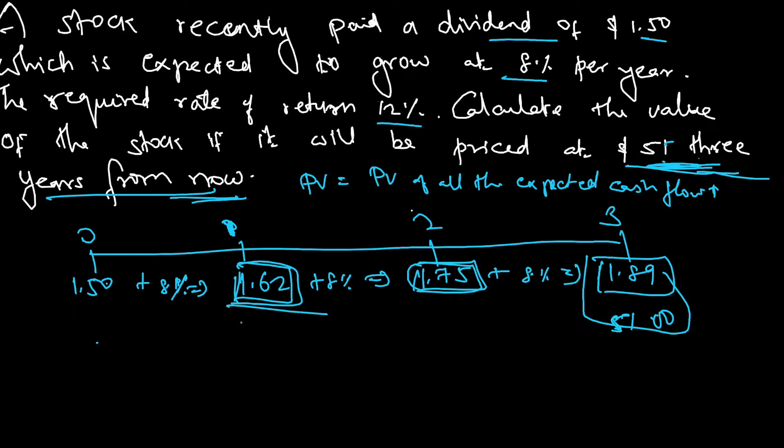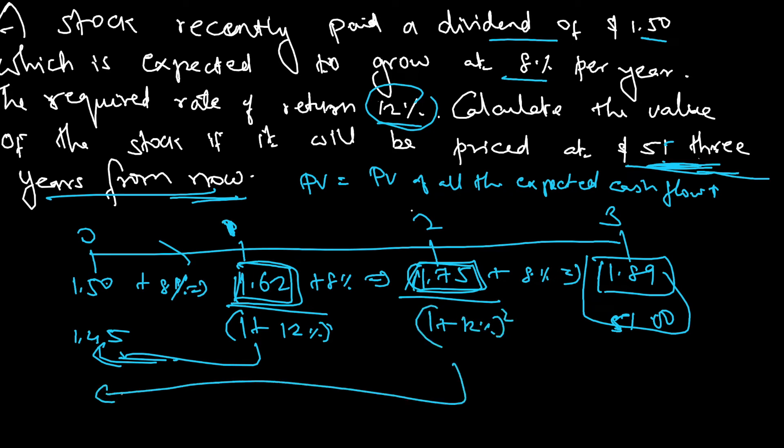Number 1: 1.62, this I will discount with the required rate of return 12%. This is for 1 year because from the present value it is 1 year away. 1.62 divided by 1.12 comes to 1.45. Then the second one which is 1.75 I take the discounted value. This is for 2 years.